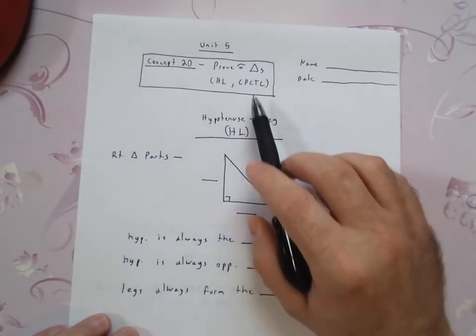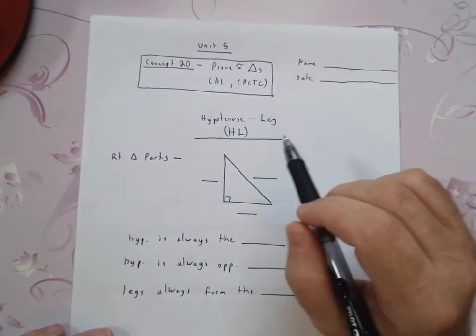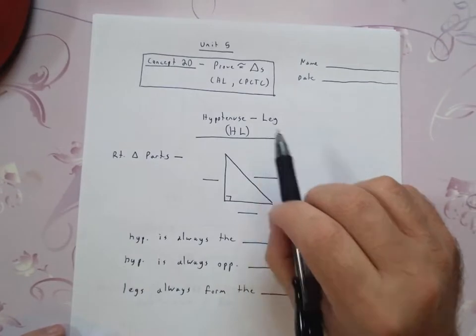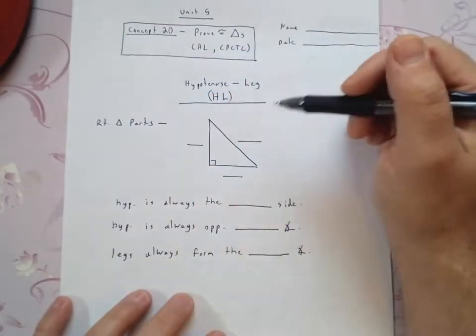Also in this concept, you're going to learn about what CPCTC stands for and how we can use that. So before we continue on to CPCTC, let's talk about HL, hypotenuse leg. Well, before we can get to that, I need to talk to you real quick about some parts of right triangles.